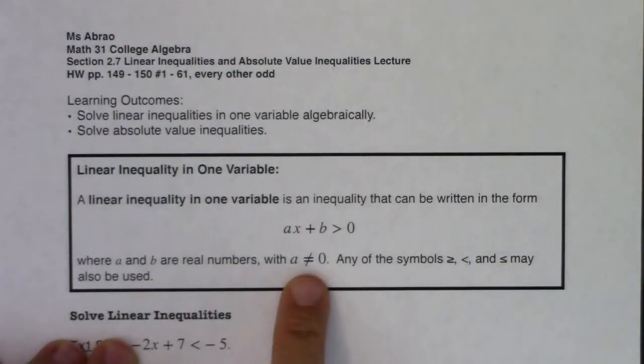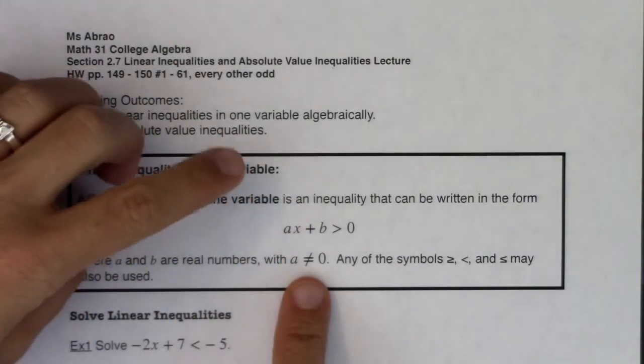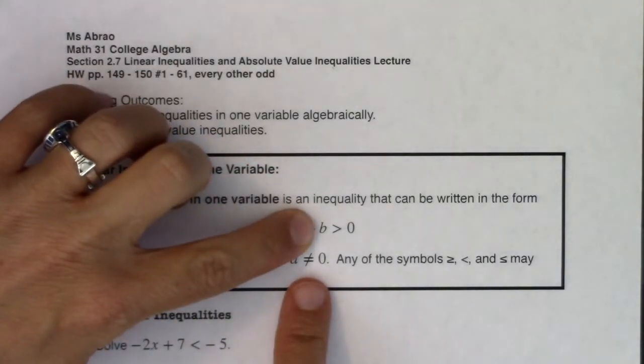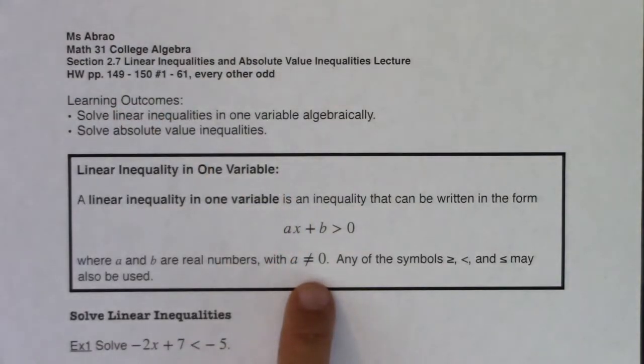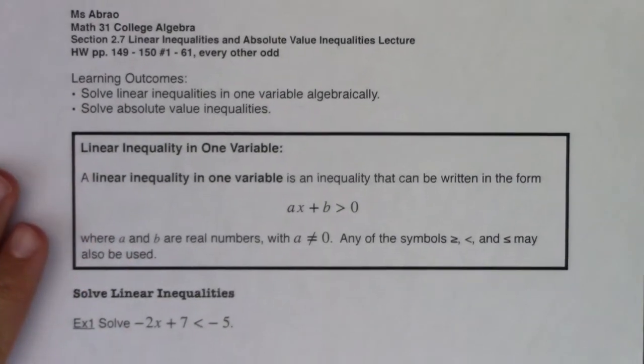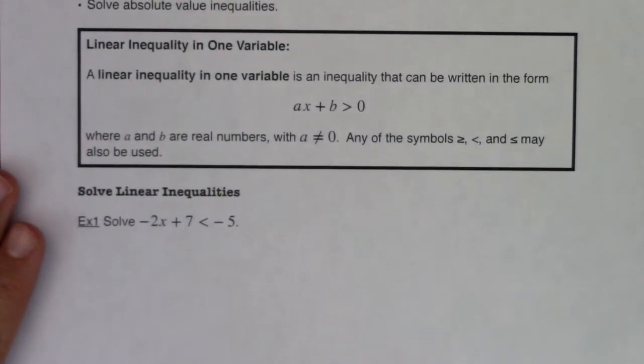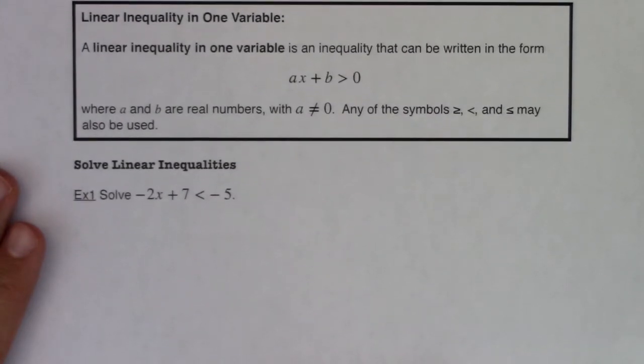They have this stipulation that a doesn't equal zero because if a did equal zero, we would just be looking at a number. So with that we're going to review how to solve linear inequalities. It's very similar to how you would solve a linear equation. There's one catch and we'll talk about it in just a moment. I'm going to scooch this up so that we can see everything here.